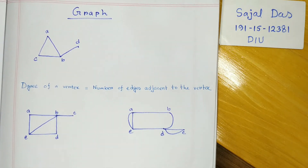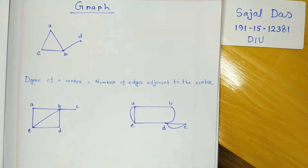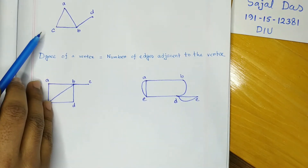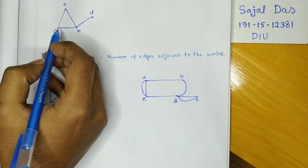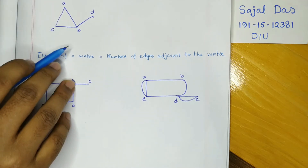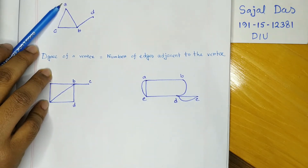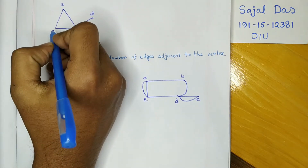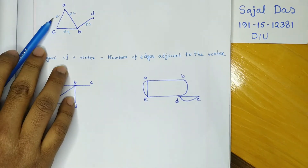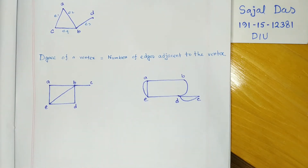I want to discuss the handshaking theorem, which is a really important topic in graph and discrete mathematics. Here I drew a graph which has five vertices: a, b, c, and d. The connections between them are called edges, so a has two adjacent edges. If I label the edges e1, e2, e3, e4 — e1 and e2 are the adjacent edges of vertex a.